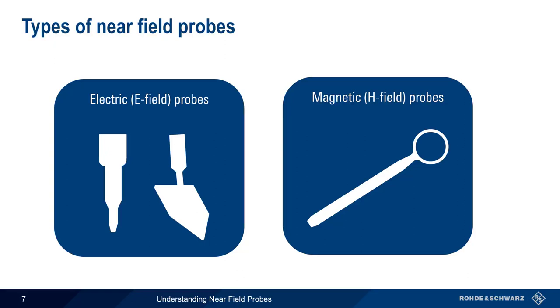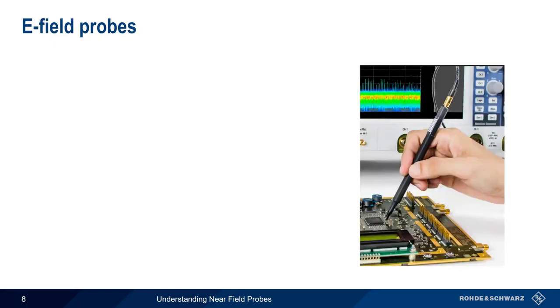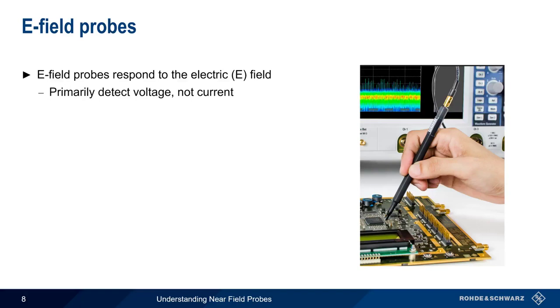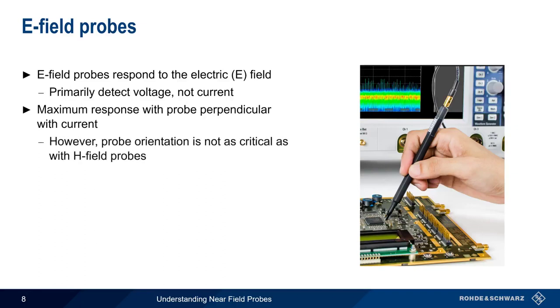Since E-field probes are designed to respond to the electric field, they are primarily used to detect voltages, not currents. Most E-field probes have a pen-like shape, as shown here, and maximum response occurs when the probe is held perpendicular to the current. However, compared to H-field probes, which we'll discuss next, probe orientation is not quite as critical.